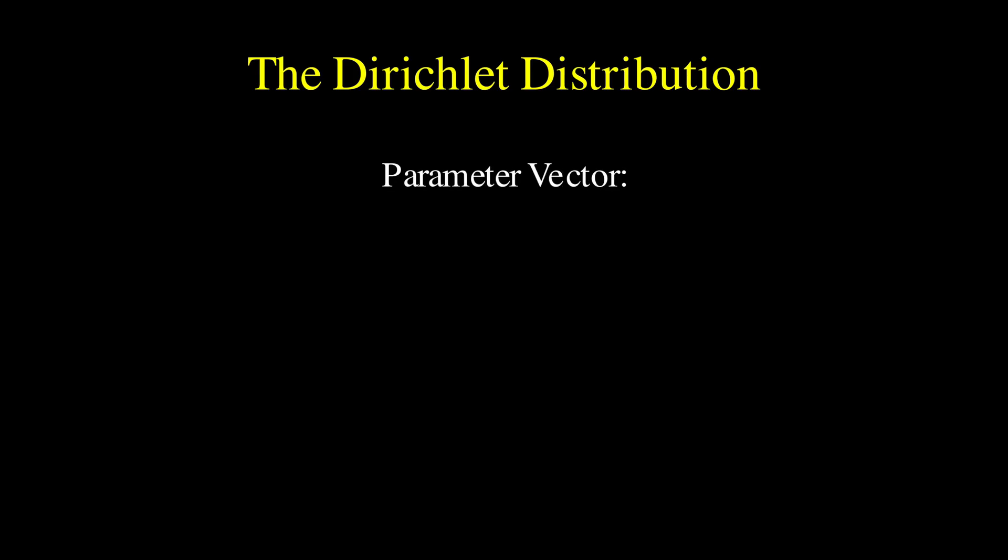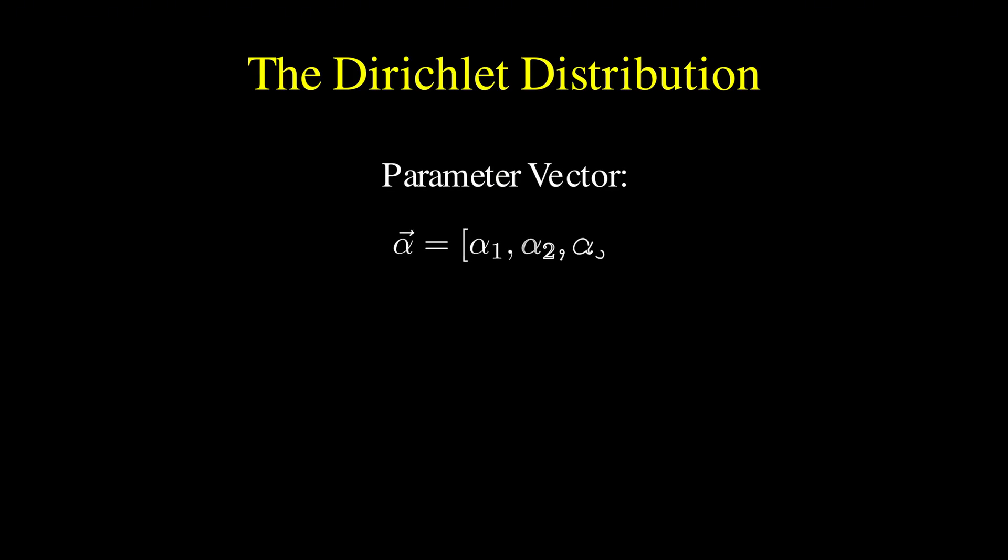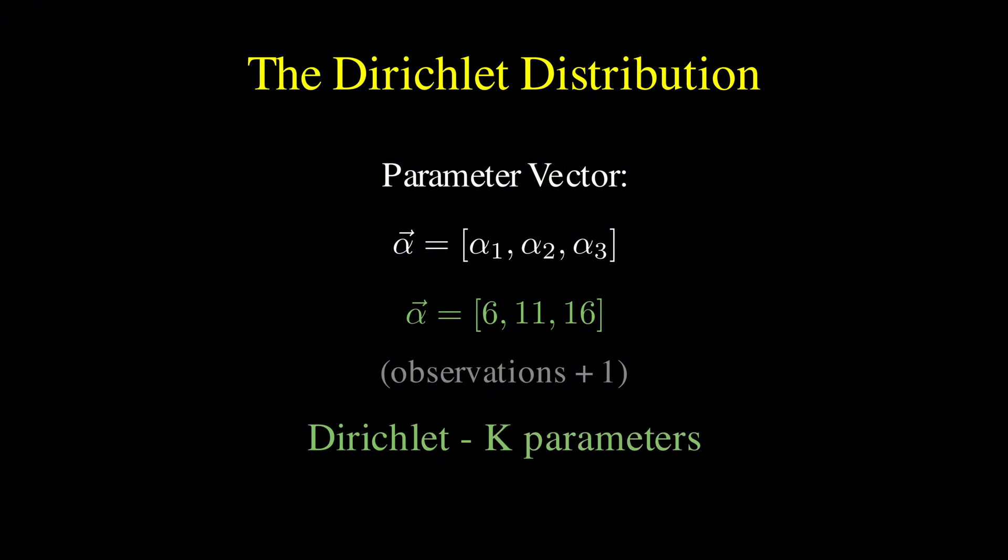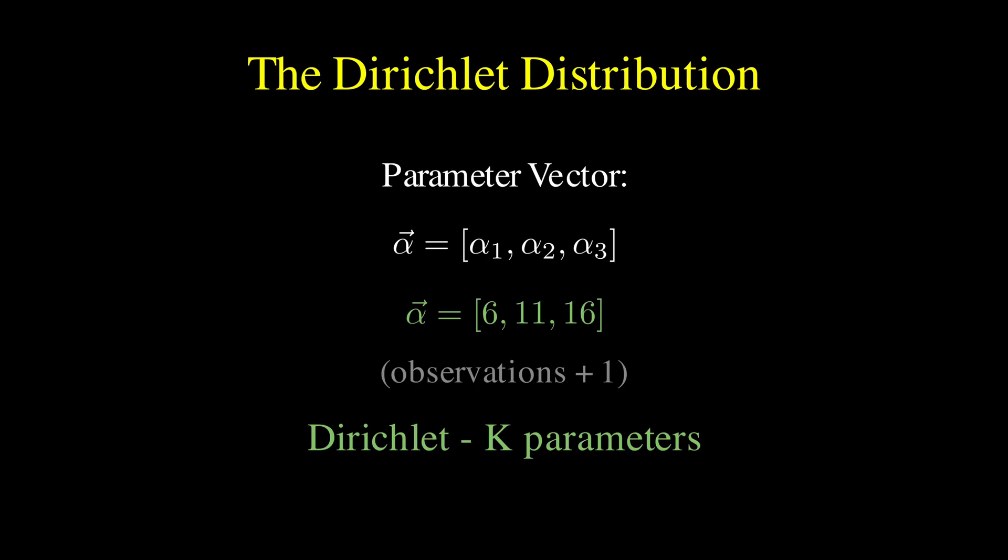The Dirichlet distribution takes a vector of parameters, which we call alpha, and just like with beta, these are your observed counts plus 1. So for our university, we'd have alpha 1 equals 6 for math, alpha 2 equals 11 for science, and alpha 3 equals 16 for English.